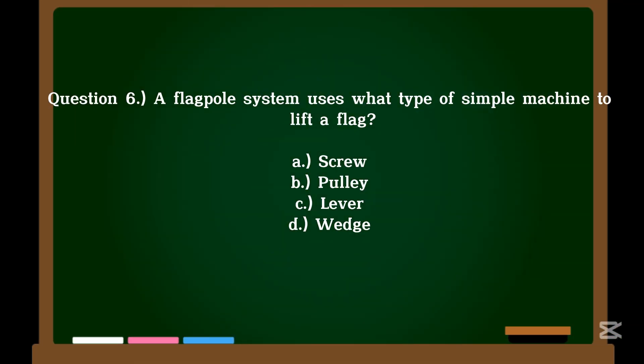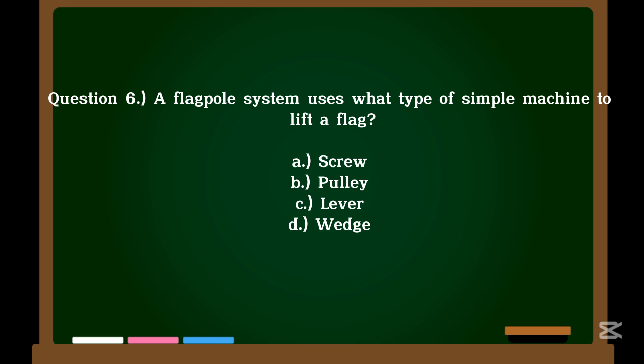Question 6. A flagpole system uses what type of simple machine to lift a flag? A. Screw. B. Pulley. C. Lever. D. Wedge. Correct answer: B. Pulley.